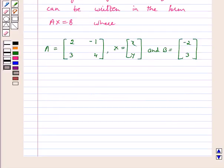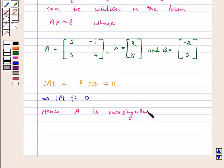We see that determinant of A is equal to 8 plus 3 which is equal to 11. This implies determinant A is not equal to 0. Hence A is non-singular. So, its inverse exists.